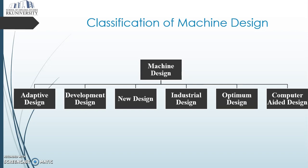Developmental design means a specific training and research development department is set up where you adopt the same design but change something — for example, modifying the design by adopting a new material or new method of manufacturing or production. You bring some new idea and give major modifications to the existing design. That means it is at the development stage.